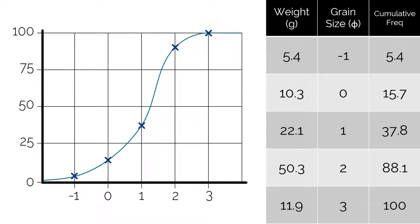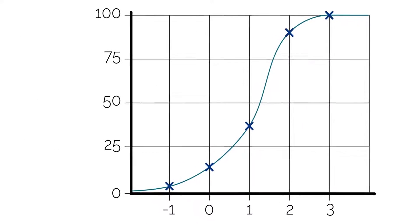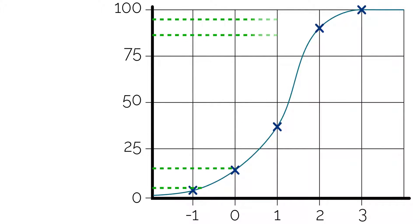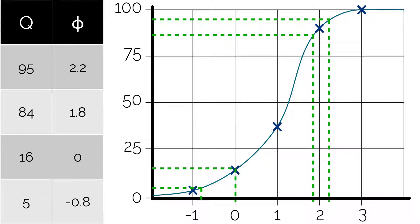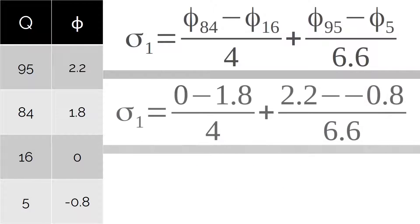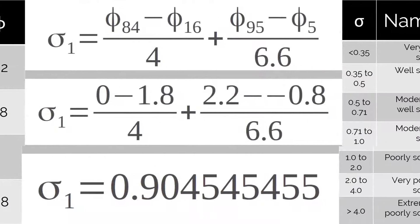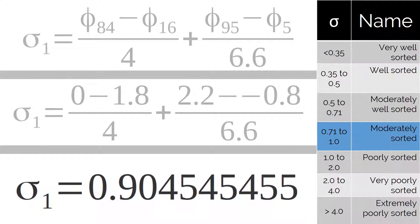Then the cumulative frequency graph is used to determine the phi values at 5, 16, 84 and 95, and the sorting coefficient is calculated with the Inclusive Graphic Standard Deviation Formula. Then the table is used to translate this into qualitative descriptions, if they are required.